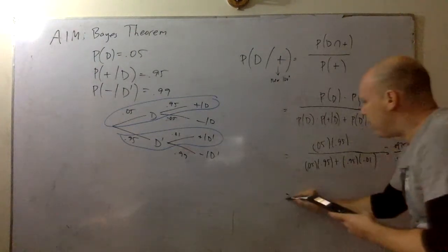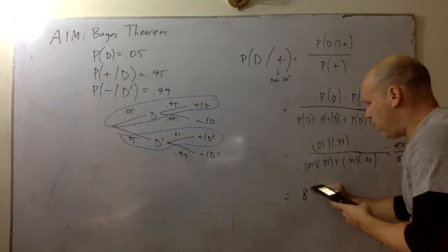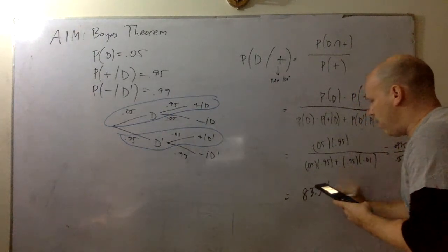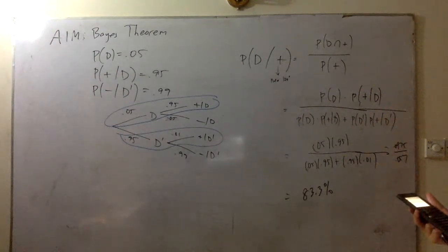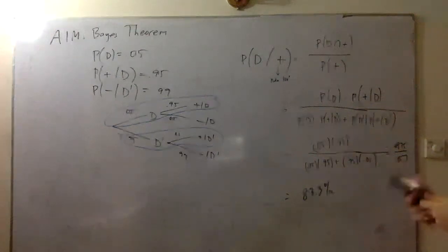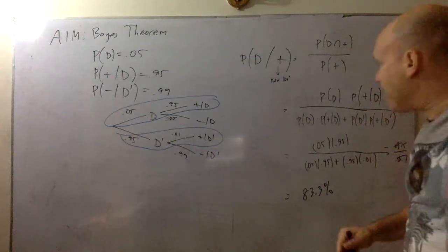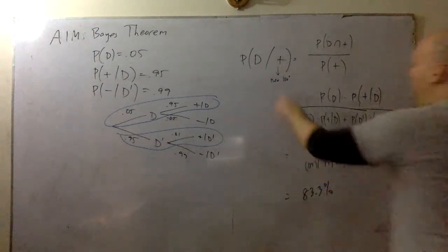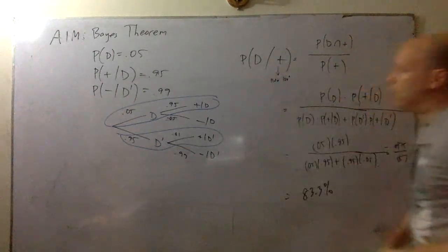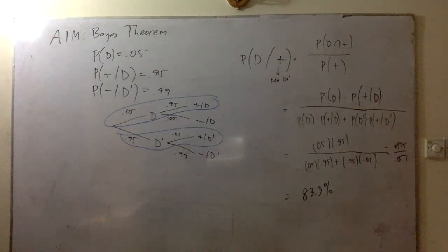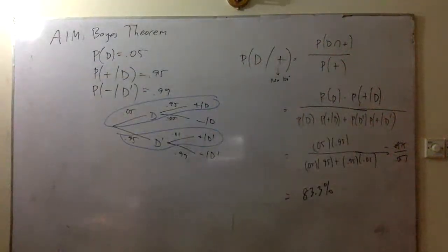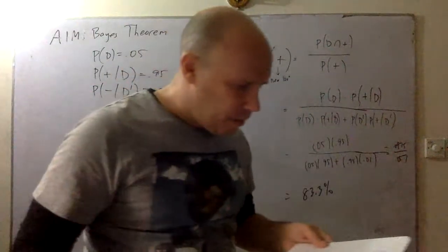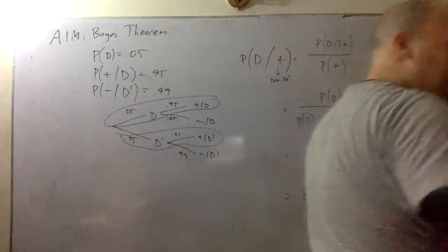There's an 83.3% chance that if you're positive, you have the disease. Let's move on. Once again, this is all about the branches. The idea is that we're given the probability of A and B, and we want to find the probability of B given A. It seems counterintuitive, but follow the branches.